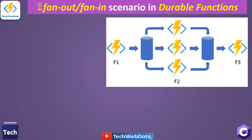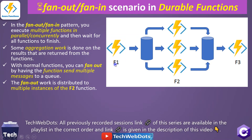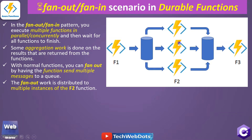This picture depicts the fanout/fanin pattern. By definition, in the fanout/fanin pattern you execute multiple functions in parallel or concurrently, then wait for all the functions to finish. Function f1 calls multiple instances of function f2, and then all the outputs of those f2 instances are integrated and passed as a single output to function f3. Some aggregation work is done on the returned results.